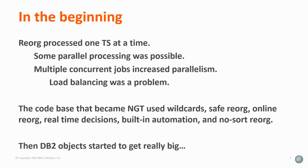Some of the big innovations include wildcards — what IBM later implemented as list defs. This code has always used wildcards to specify more than one table space at a time. It was also the first to do a safe Reorg, which is reorg into a shadow copy — that's always been the case since the beginning, and that led into online Reorg, which it also did a couple years before anybody else. It has always done real-time decisions on whether something needs Reorg, even before real-time stats. It has never based the decision on RUNSTATS because it's expensive to run RUNSTATS just to see if Reorg needs to run. There's also built-in automation and it has always been based on a no-sort Reorg.